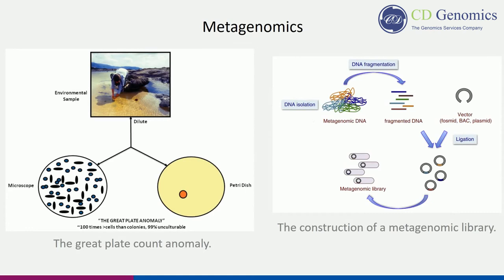The inability to isolate and cultivate many types of microorganisms has long limited microbial studies. The cultivable fraction of microbes is low, less than 1%, a remarkable phenomenon known as the Great Plate Count Anomaly. Metagenomics, also called community genomics, provides a solution for this cultivation bottleneck by assessing the genetic content of non-cultured microbes. The brief process includes the isolation of DNA from environmental samples, the cloning of DNA into artificial bacterial chromosome, plasmid, or fosmid, and the following sequencing.